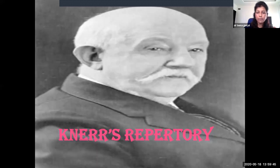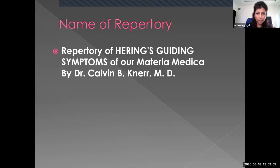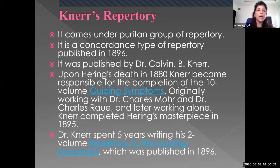Now the second concordance repertory is Neer's Repertory. The full name is 'Repertory of Hering's Guiding Symptoms of Materia Medica' by Calvin B. Neer. It comes under the Puritan group of repertory and is a concordance repertory published in the year 1896. Undergraduate students, please note down this publication year as it may be asked as a two-mark question.